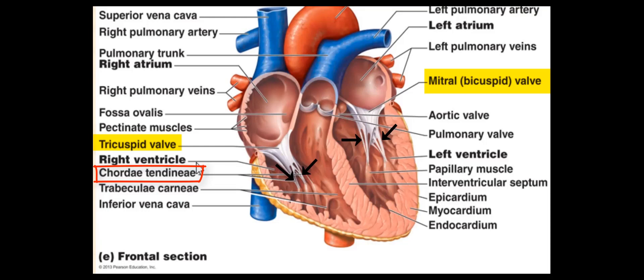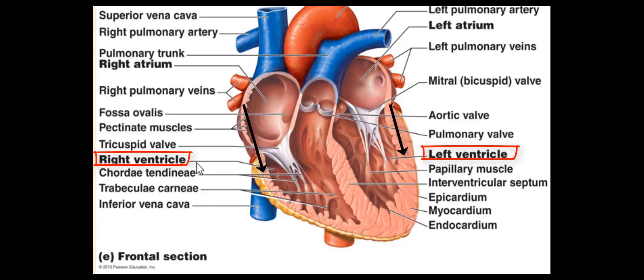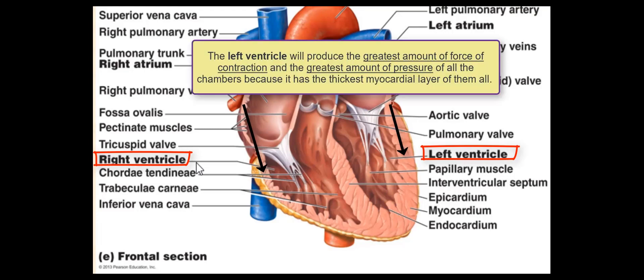The chordae tendineae provide additional structural support to these heart valves and help secure these valves to the papillary muscles of the ventricles. If we compare the thickness of the right and left ventricles, there will be a visible and very apparent difference between these two, as you will see in the next slide. Therefore, the pressure and force that each generates when they contract will be significantly different.